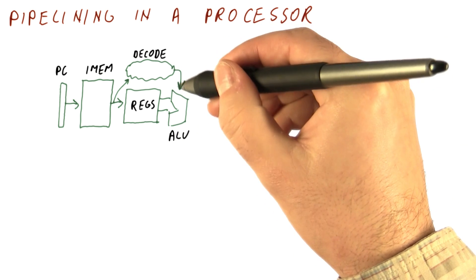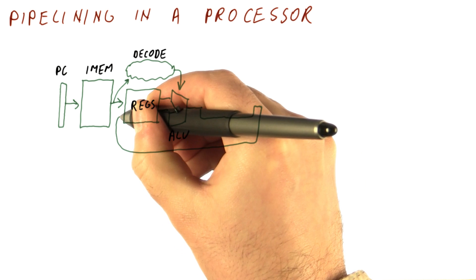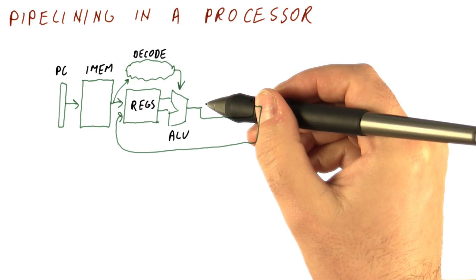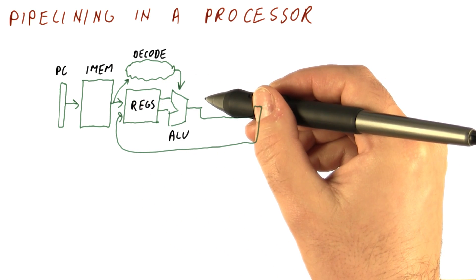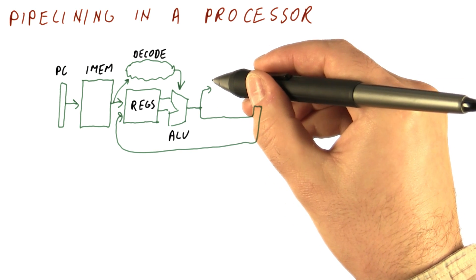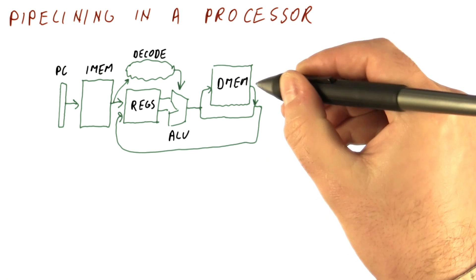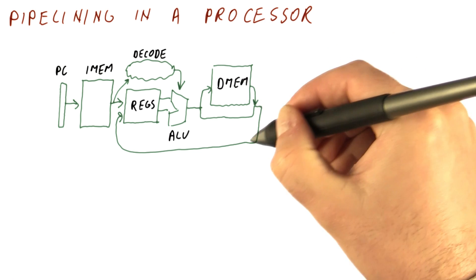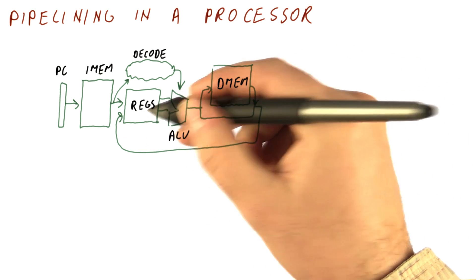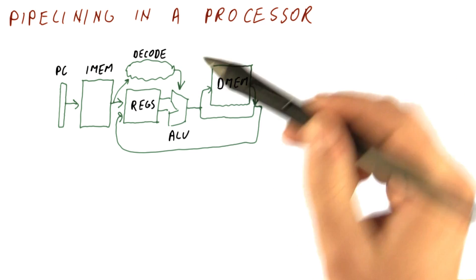The decoding logic tells the ALU what to do. Once we get the result of the ALU, we could be done and just write the result to the register. Or we could have a load or store instruction, in which case what the ALU computed is really the address that we use to access our data memory, and what comes out of data memory is what we end up writing to our registers. And then of course there's stuff to do with branches and so on.